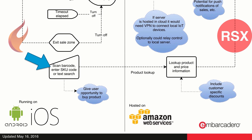Another feature we added is for the customer to have the ability to scan a barcode or search for products by SKU or text, giving them the ability to look up product information and pricing as they're shopping. This can also be connected to the BeaconFence system to help them navigate to the location in the store where the product is. And if they find the product they're looking for, they could potentially also buy that product right through the application, with options for special offers and discounts as well.